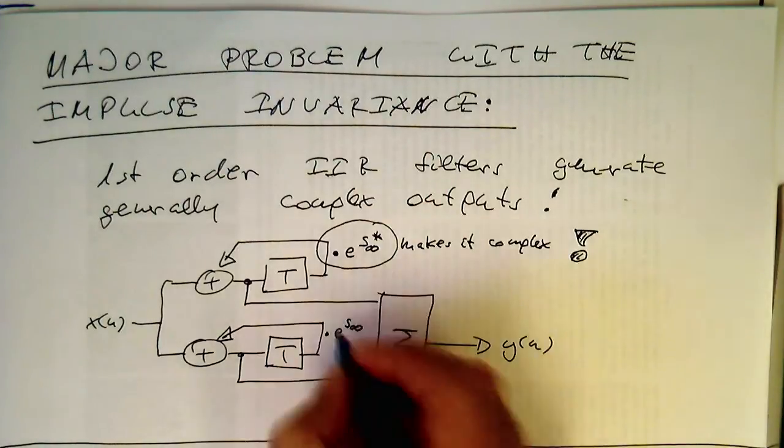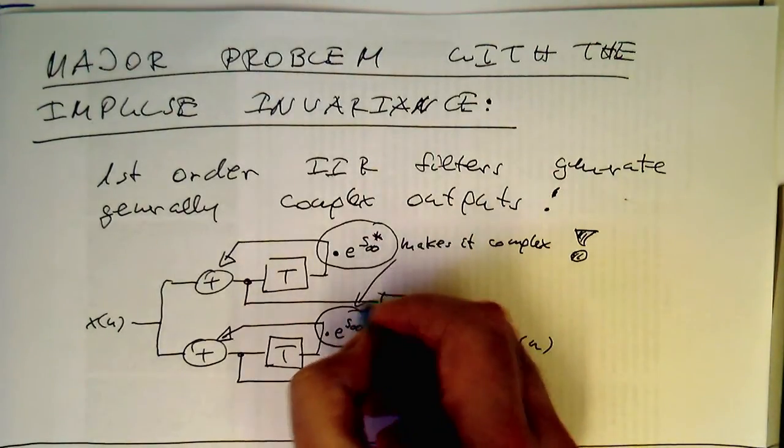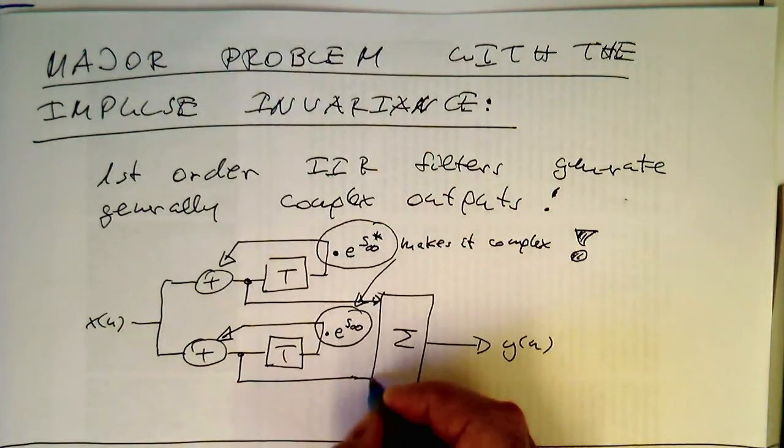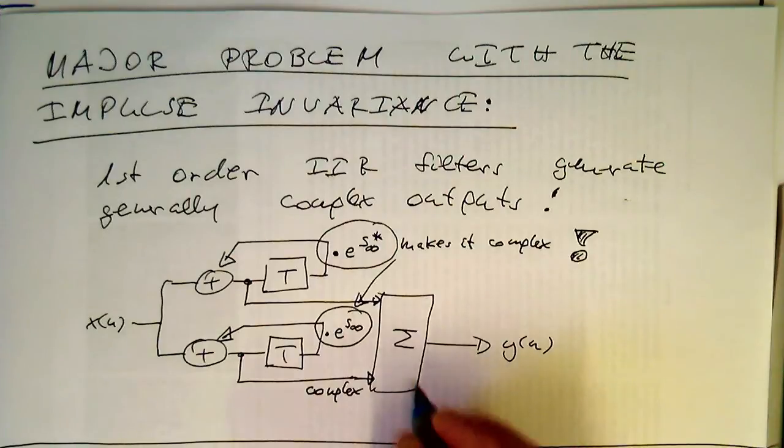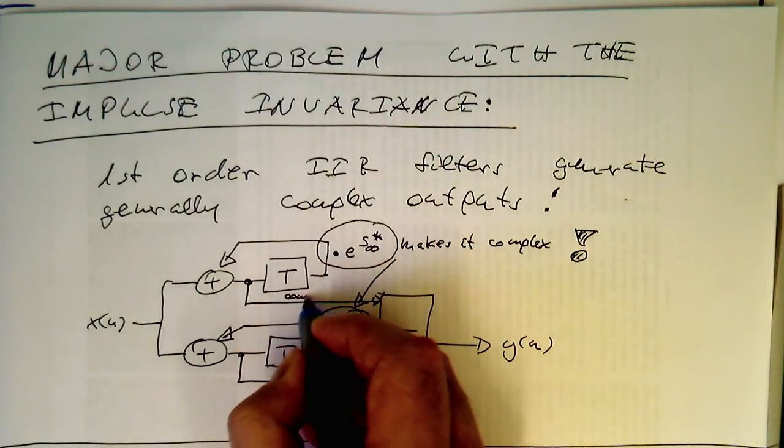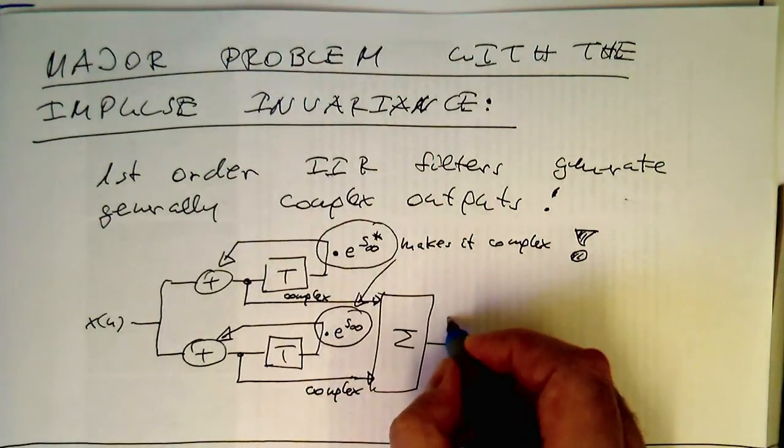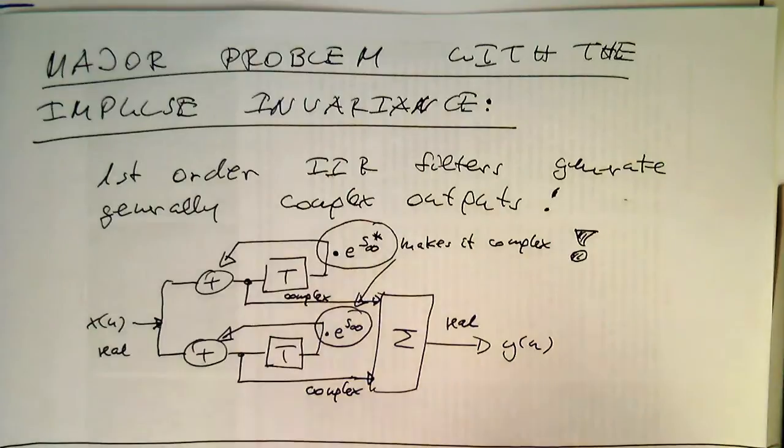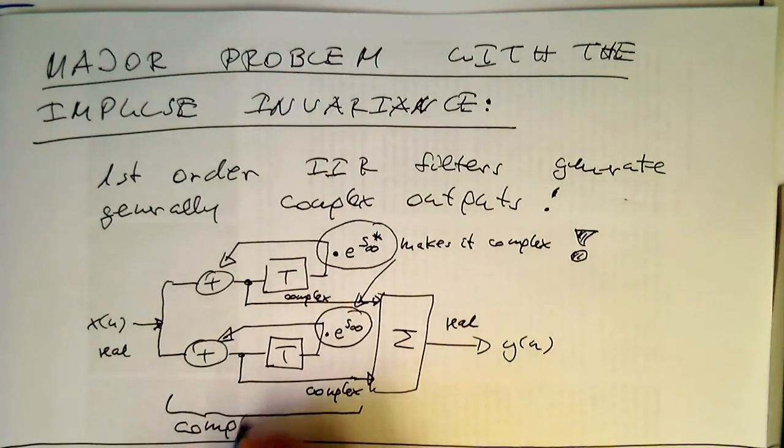This is obviously not very desirable, and so these and also this one here makes it complex. So therefore we have a complex output here and also here. And then only in the summation node here this is generating a real output again. And so even if we are sending in a real signal here, then the whole processing here is complex.